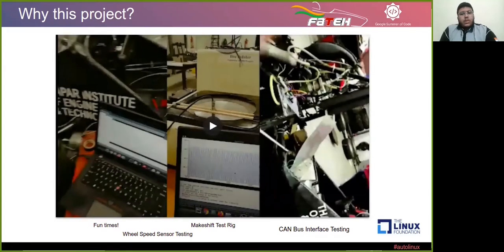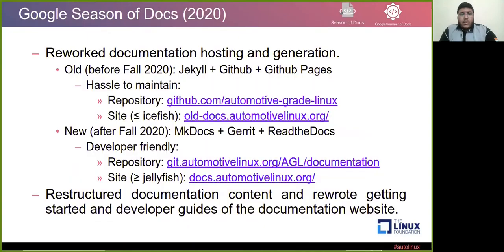Working with the Formula Student team was a very hands-on experience, and it intrigued me. During my research I came across Automotive Grade Linux — that was my starting point. At the start of 2020, I was very interested in AGL, and eventually I started attending the weekly developer calls and talking with mentors and contributors. I saw the opportunity of Google Season of Docs, so I talked with mentor Jan-Simon, who told me the current problem was that their documentation was very hard to maintain.